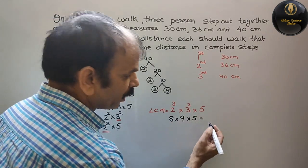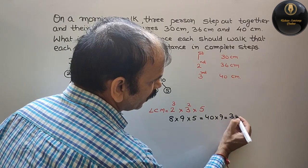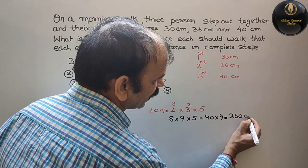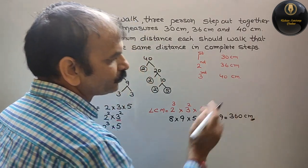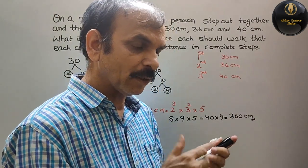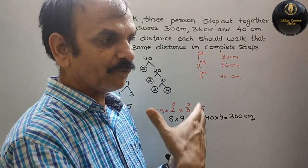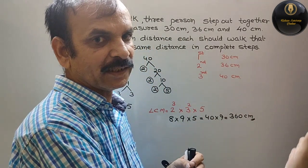into 9 that is equal to 360. That means at 360 centimeters to cover and fresh steps will start.